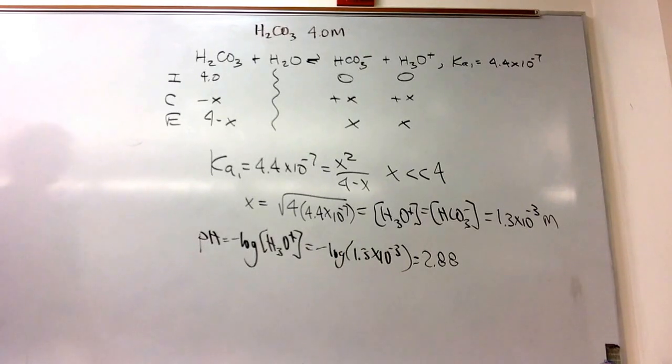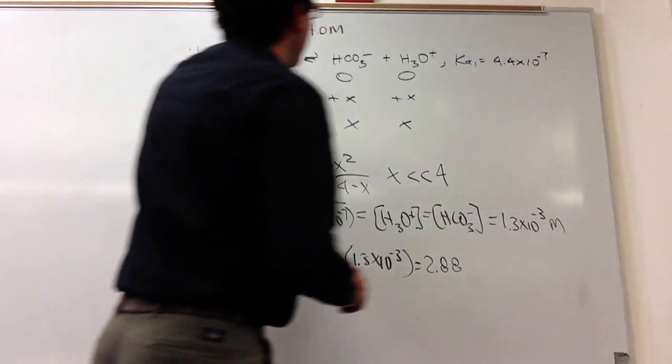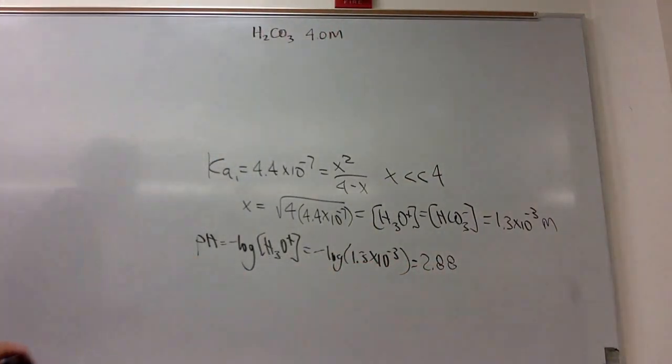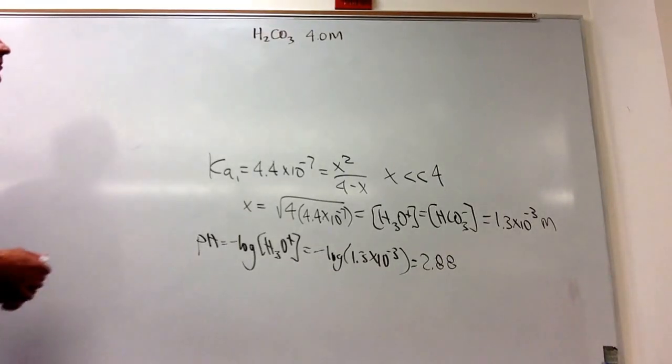The next part of the problem is to restart. You don't need the ice table anymore. Rewrite this equation now for the second loss of the proton. So you start with HCO3. So you do the reaction, the neutralization for HCO3 now.